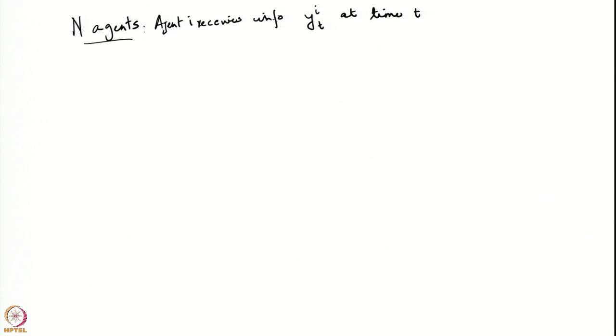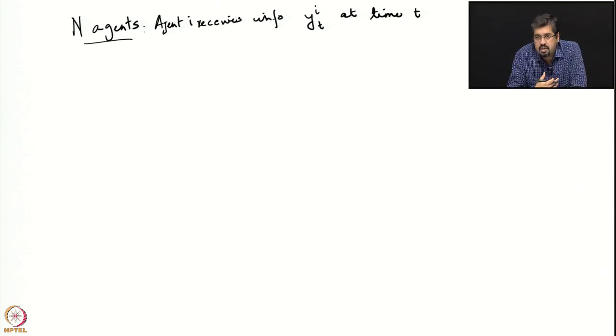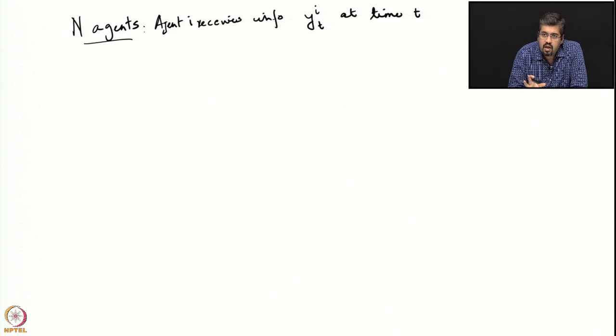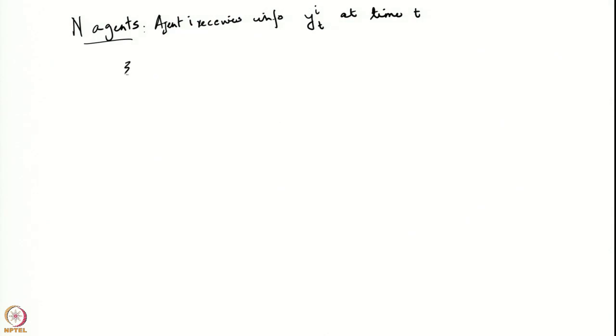The information that agent i receives is a function of all the events that have happened in the past — this includes the actions that other controllers have taken, the actions it has itself taken, and so on. It is also affected by random noise from the environment. We will accumulate all sources of noise in the problem: this includes the initial state, noise present in the system (system noise), and noise appearing in measurements (measurement noise). We consider all of this as environmental noise.